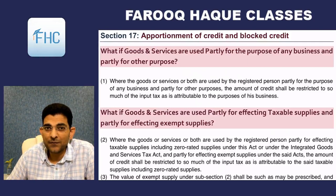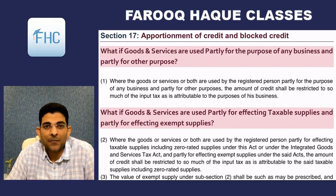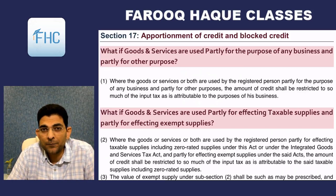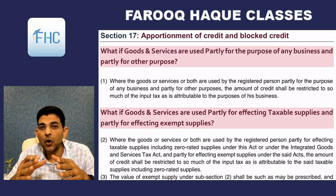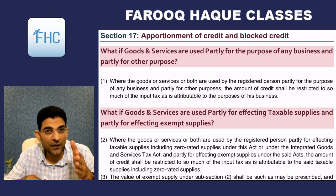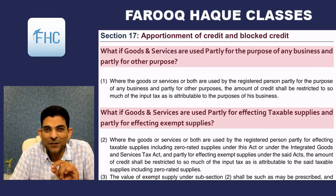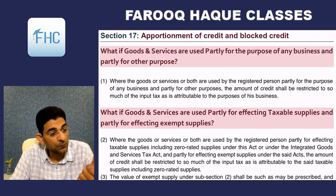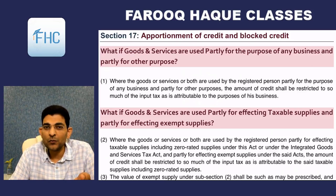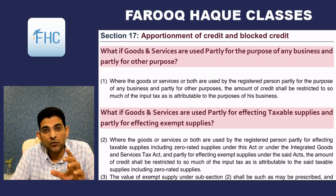Let's see Section 17, a very interesting section on apportionment of credit and blocked credit. Blocked credit means certain inputs or capital goods on which credit is not allowed at all. We will see the whole list under Section 17 subsection 5 — inputs, input services, and capital goods on which credit is not allowed. Before we go to subsection 5, we'll see apportionment of credit.